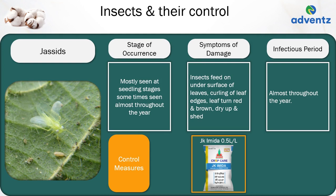The next insect is jassids. It is mostly seen at seedling stage and sometimes throughout the year. The symptoms of damage are insects feed on the under surface of leaves, leading to curling of leaf edges; leaves turn red and brown, dry up and shed. Jassids are active throughout the year. Control: apply JK Imida at 0.5 ml per litre.